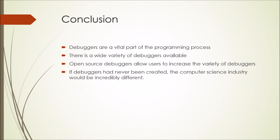In conclusion, debuggers have become a vital part of the programming process ever since their creation. I don't know how computer science would function today if they did not exist. Because they've been around for so long and are such an important part of programming, there's a wide variety of debuggers available — from console IO to GUI, to multi-language and single-language, like the JTEST Java-only debugger. There are just so many debuggers that I wasn't able to talk about today, but I did include them in my paper. There are open source debuggers that allow users to create their own variety, and by this pattern they should only become more in-depth and more varied as time goes on.